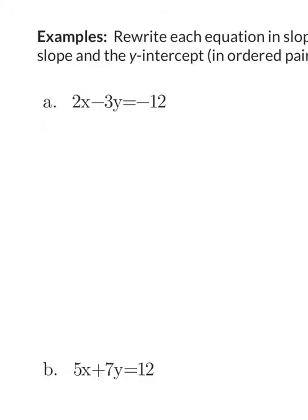In order to get rid of 2x, I want to subtract 2x. We will subtract 2x on the left and remember whatever we do to the left, we do to the right. On the left, my 2x's cancel and I am left with negative 3y. On the right, I am left with negative 2x minus 12.